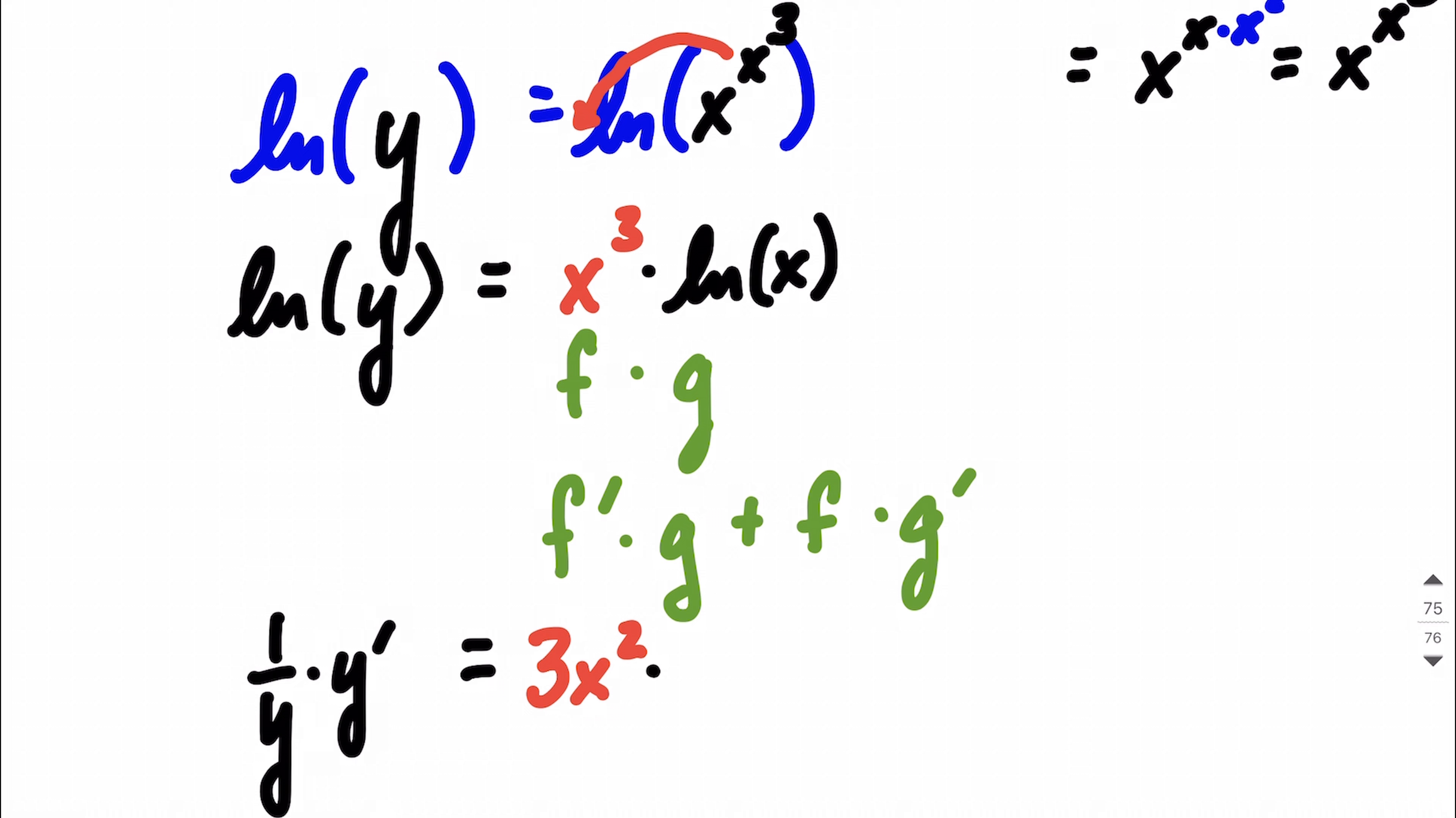And next to that, we're just going to multiply by g, which is the natural log of x. Plus, now we copy down f, which was x to the third power. And we're going to multiply that by the derivative of natural log of x, which is 1 over x.